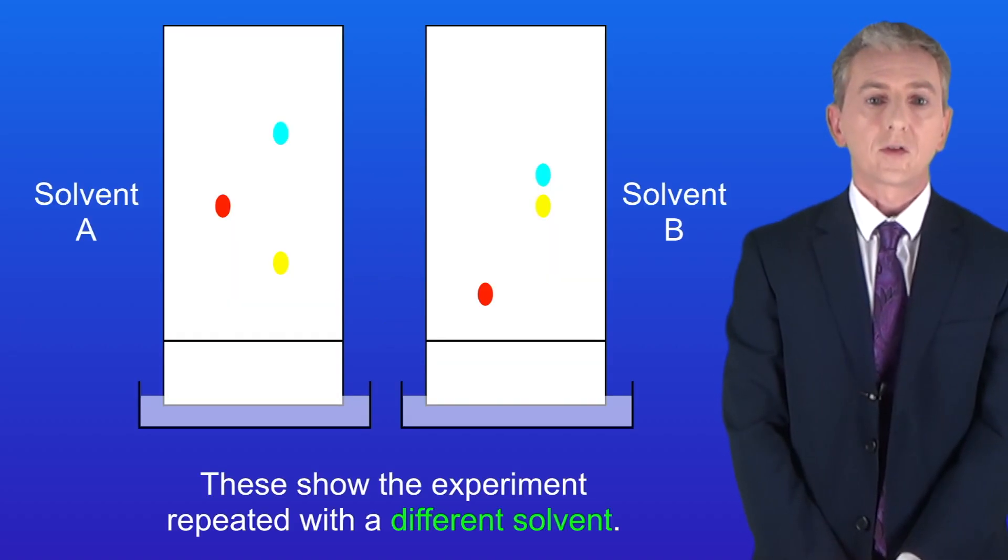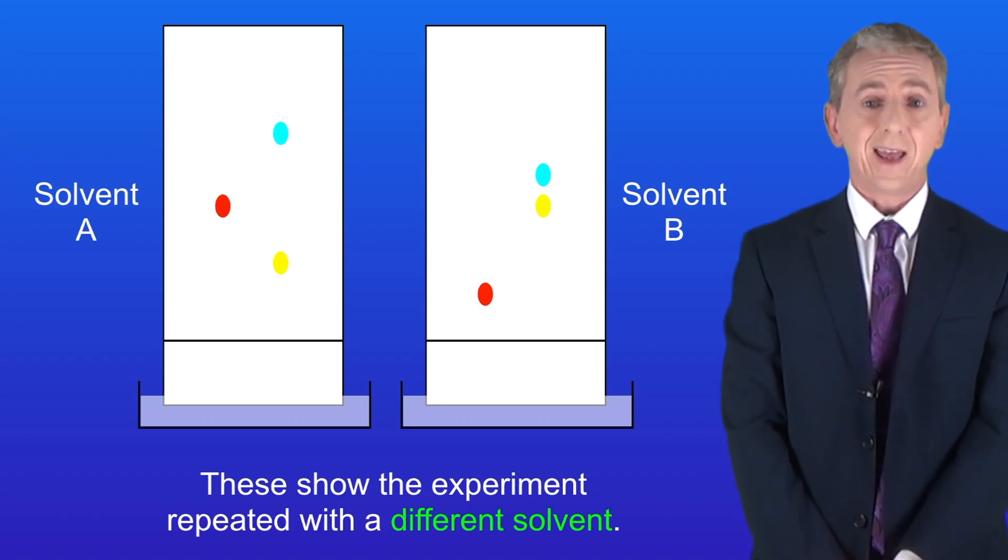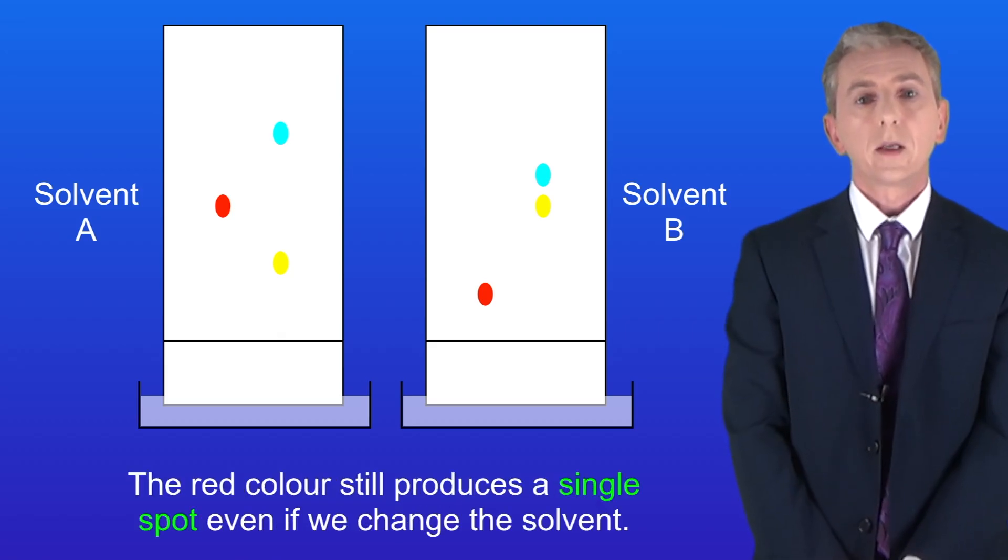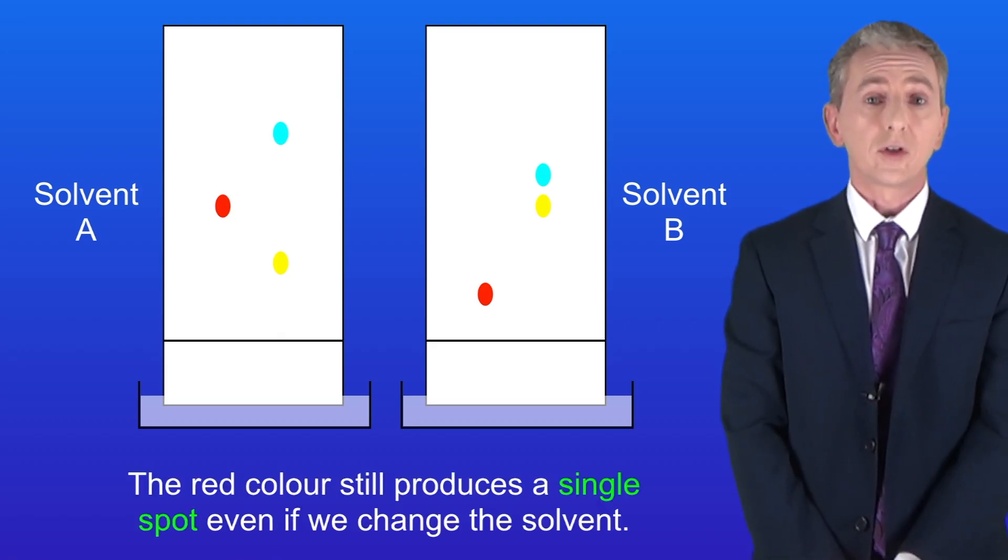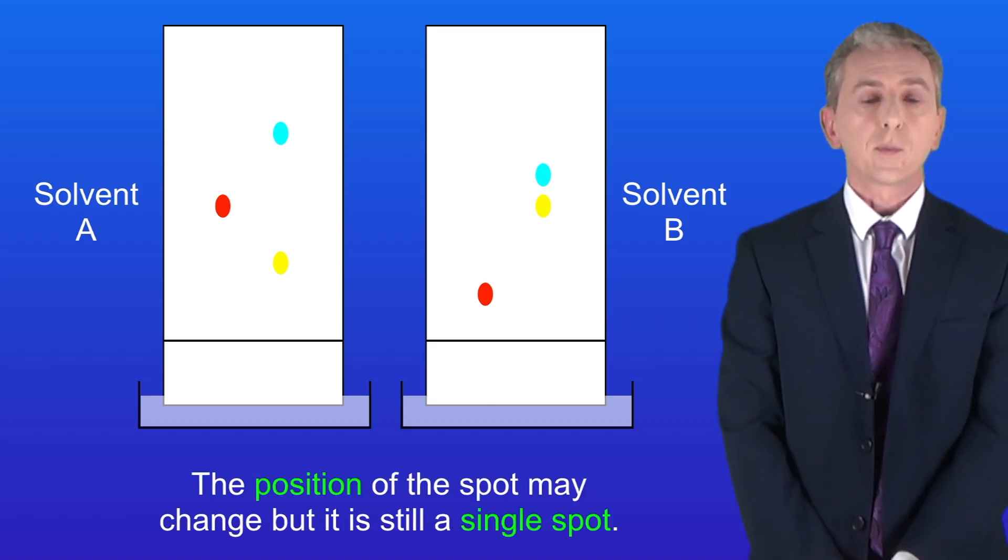I've shown you that with these two diagrams. These show the experiment again but this time repeated with a different solvent. You can see that the red colour still produces a single spot even if we change the solvent. The position of the spot may change but it's still a single spot.